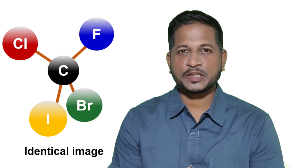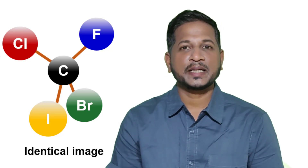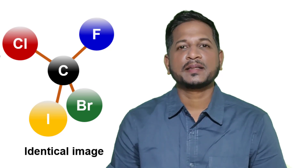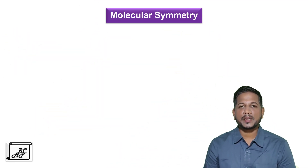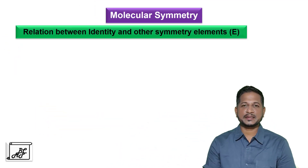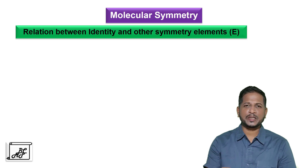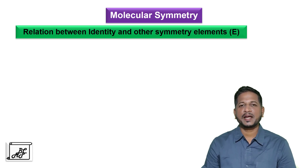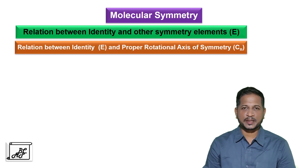In future, when we write character tables, it is very important to understand the relation between the identity element and other symmetry elements. So let's begin with the relation between identity and the proper rotational axis of symmetry.